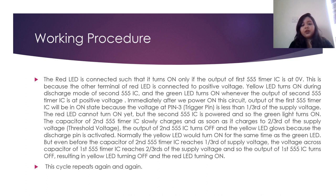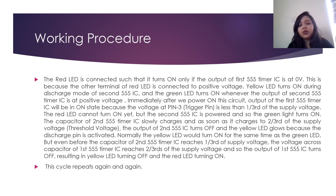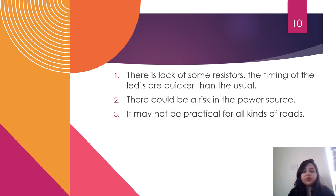Immediately after we power on the circuit, the output of the first 555 timer IC will be on because the voltage at pin 2, the trigger pin, is less than one third of the supply voltage. Normally the yellow LED would turn on for the same time as the green LED, resulting in the yellow LED turning off and the red LED turning on. This cycle repeats again and again.